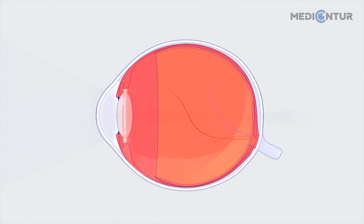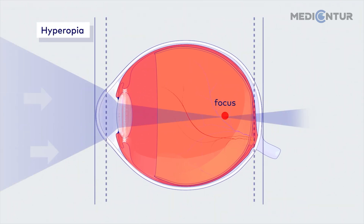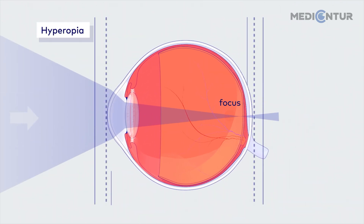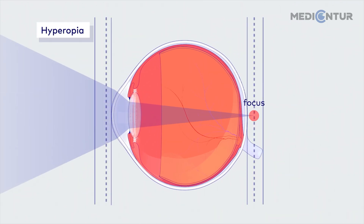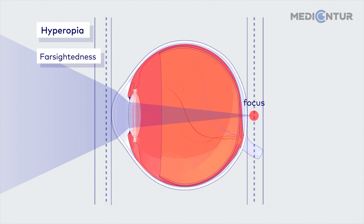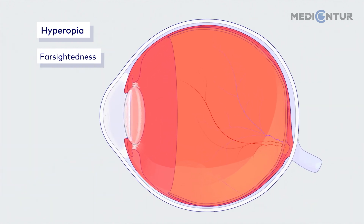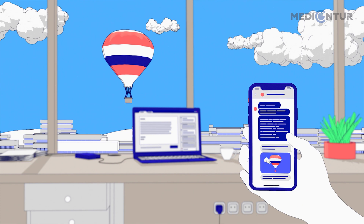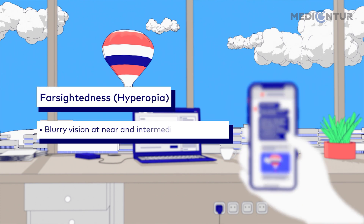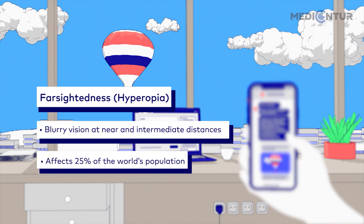On the other hand, if the eyeball grows too short, the focal point is located behind the retina. With hyperopia, or more commonly known as farsightedness, one sees far away objects clearly, but nearby objects are blurred. This also affects roughly every fourth person in the world.